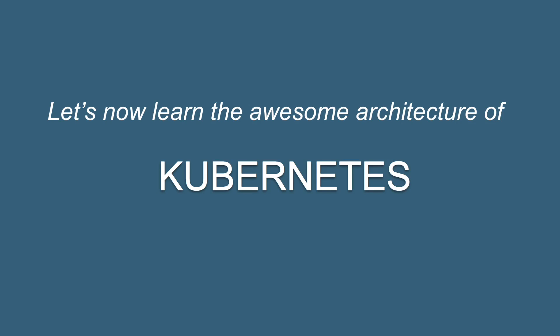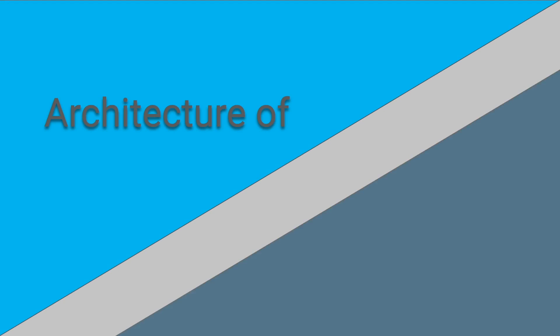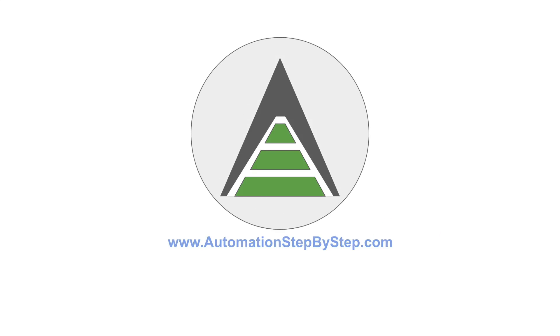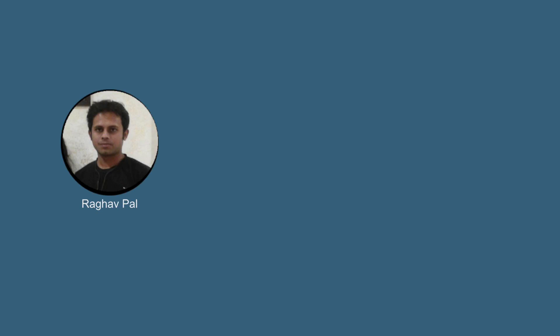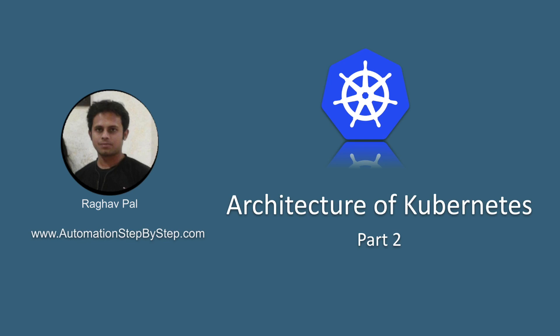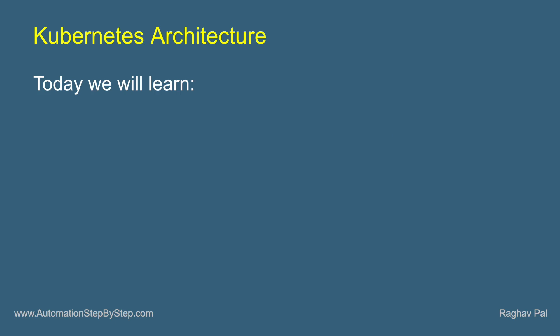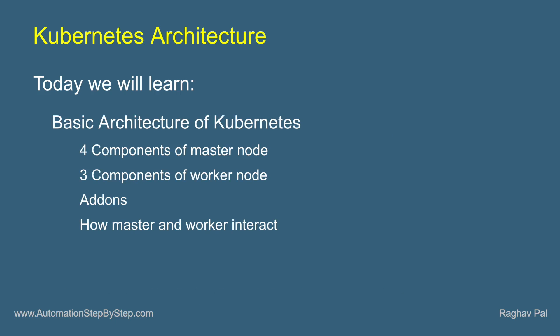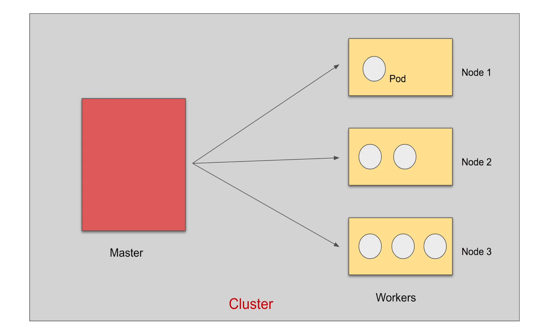Hello and welcome. I'm Raghav, a teacher, and you can find all my work on my website automationstepbystep.com. In this session, we are going to learn the architecture of Kubernetes, and this is part two. I am going to go very basic step by step, so do not worry if you are a complete beginner. We will learn the basic architecture of Kubernetes, see the four components of the master node, the three components of the worker node, add-ons, and how master and worker nodes interact with each other.